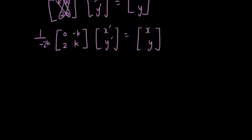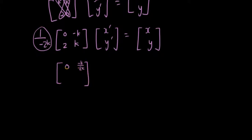Now we multiply the constant outside into the matrix, giving entries: 0, −k/−2k, 2/−2k, and k/−2k. This matrix times (x', y') equals (x, y).